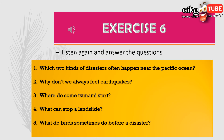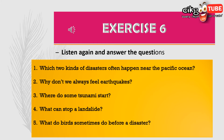Exercise 6: Now listen again and answer the questions. Which two kinds of disaster often happen near the Pacific Ocean? Why don't we always feel earthquakes? Where do some tsunamis start? What can stop a landslide? And what do birds sometimes do before a disaster? Listen and note down your answers.